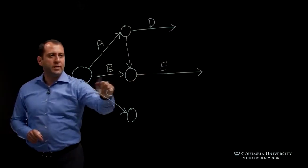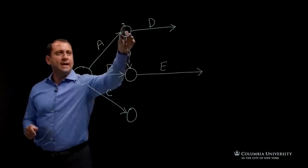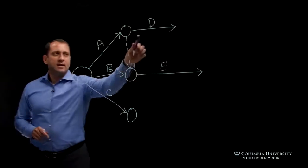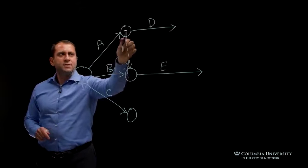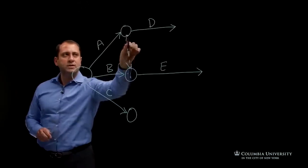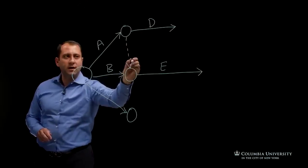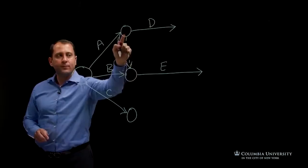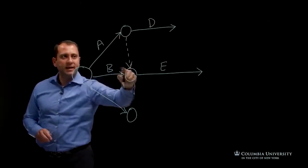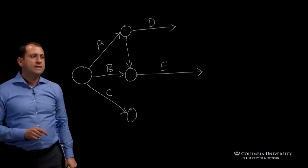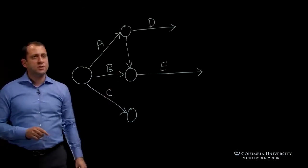It says when B finishes and A finishes, E starts. Activity D here, when A finishes, D starts, but there is no relationship with B because this is only a dummy activity and the arrow goes towards this node, not this one. So activity A is linked to E with B as a finish-to-start relationship.